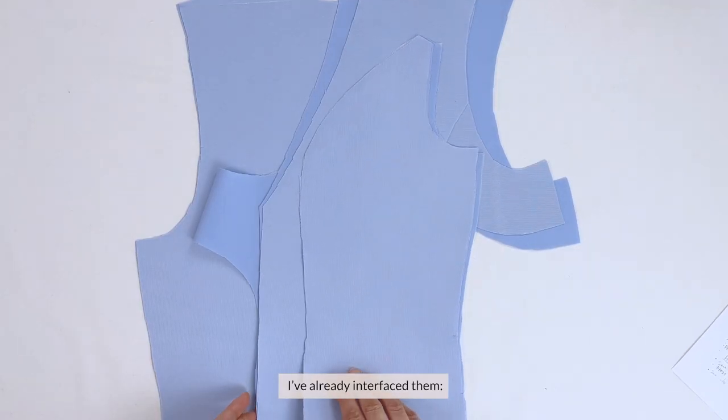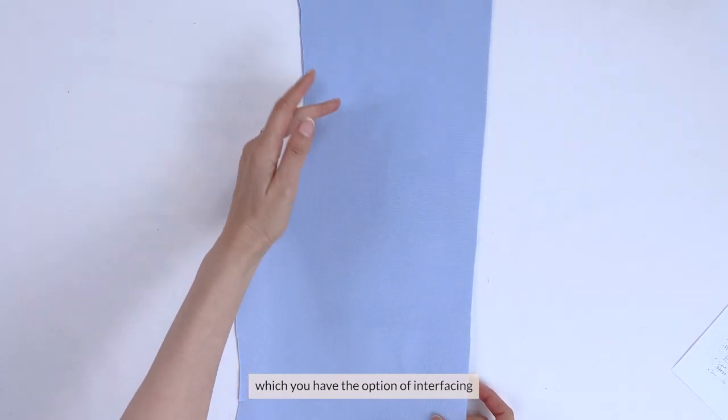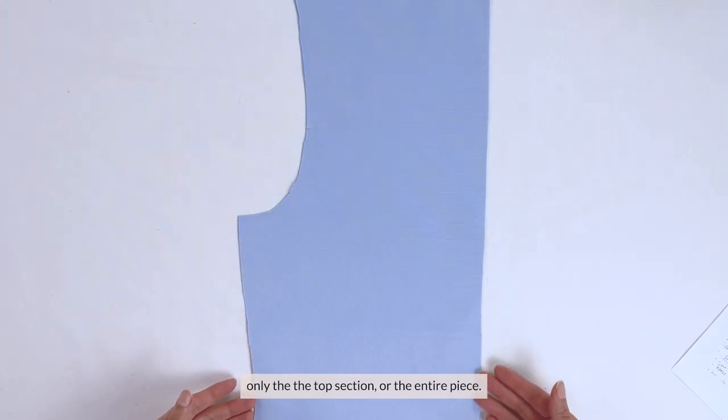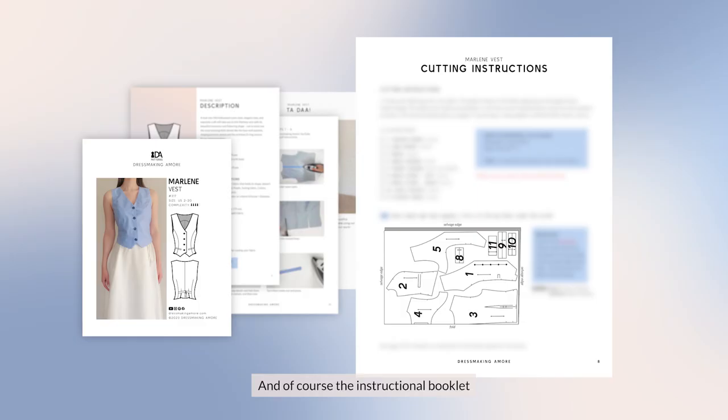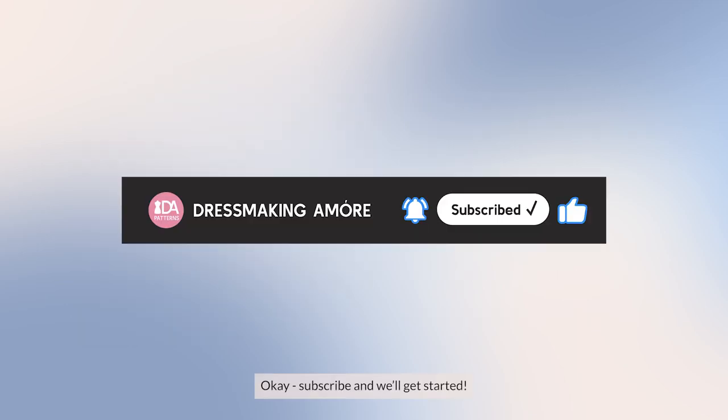I've already interfaced them, the front details, the facing details, and the back piece, which you actually have the option of interfacing on just the top section or the entire piece. And of course, the instructional booklet that comes with your pattern will guide you on all of this. Okay, subscribe and we'll get started!